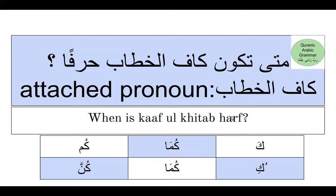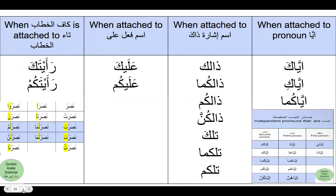The dama'ir we have learned in Arabic are under the umbrella of al-ism; they can be rafa', nasb, or jar because they fall under the category of al-ism in the Arabic language. However, there are cases when kaf al-khitab, which is an attached pronoun, can be treated as a harf and is in fact treated as a harf.